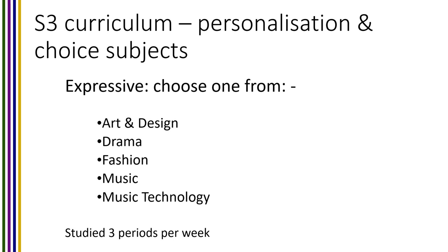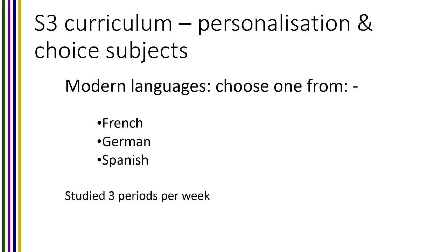On the email that you received with this presentation, there will have been a link to a form — that form is the course choice form for this year. It starts off fairly straightforward: we're just looking for your name and your class. Question four is to choose your expressive art from art and design, drama, fashion, music, or music technology — whichever one you choose, you will study for three periods per week. Within the modern languages faculty, you can choose from French, German, or Spanish; again, three periods per week.